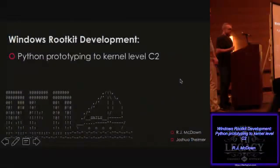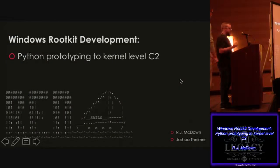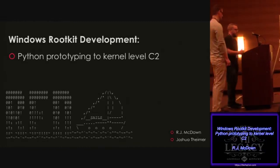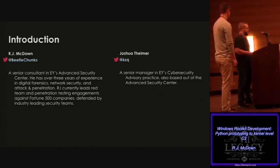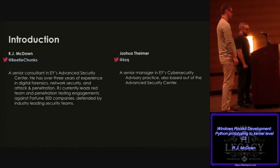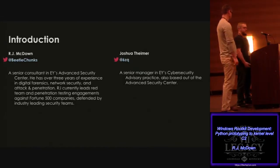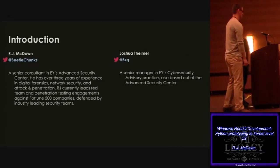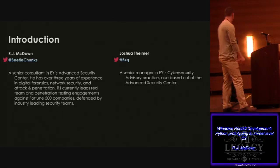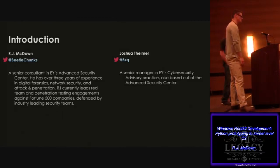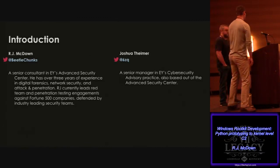I'm R.J. McDowen and this is Josh Timer. We're going to be talking about Windows rootkit development, Python prototyping to kernel level C2. I'm a senior consultant at Ernst & Young on their attack and penetration team - we do red teams and all sorts of different stuff. I'm also with EY, based out of the advanced security center, primarily doing attack and penetration and assisting on some incident response jobs as well.